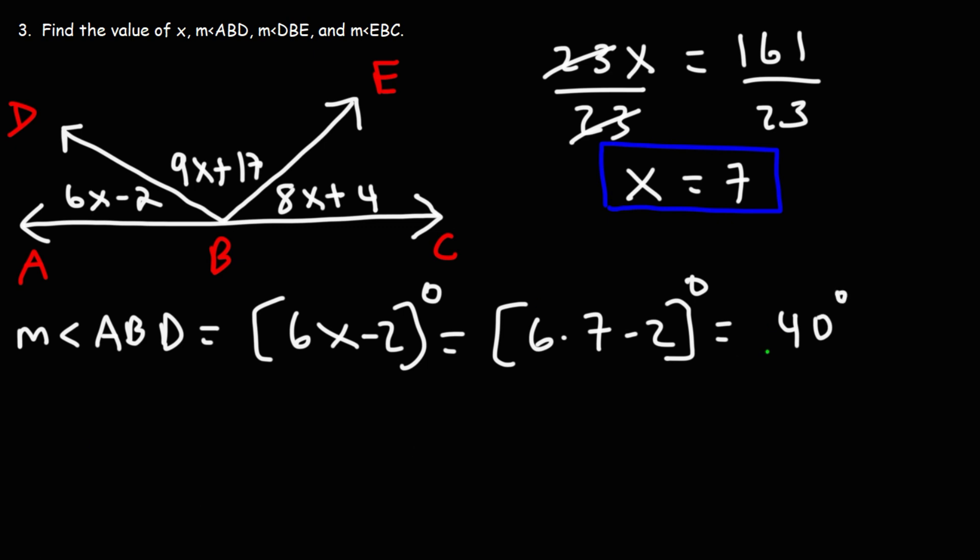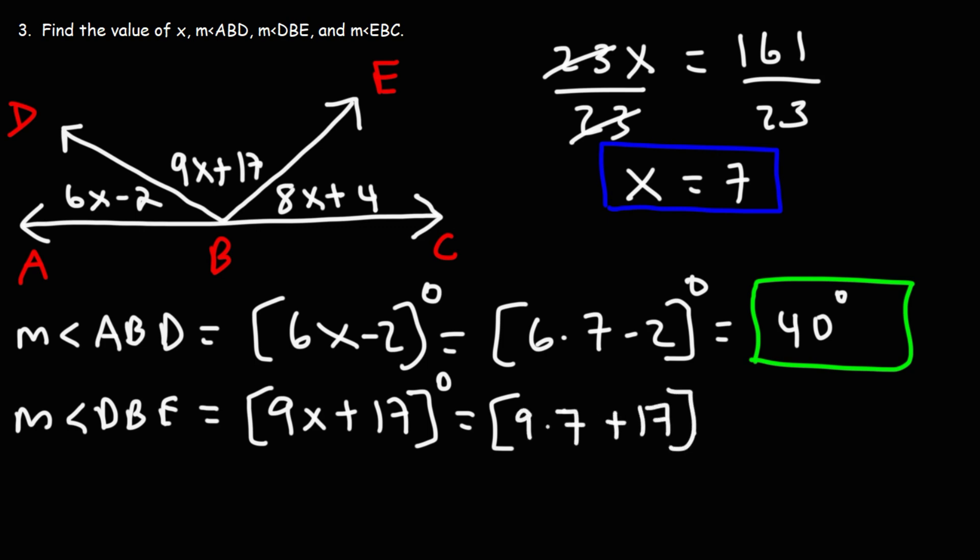So that's the angle measure for ABD. Now let's move on to the next one, DBE, which is 9X plus 17. X is 7. Now 9 times 7, that's 63. And 63 plus 17, that's 80.